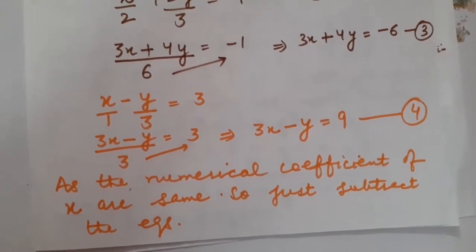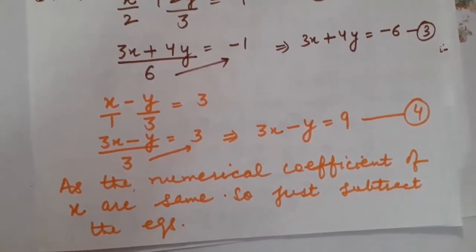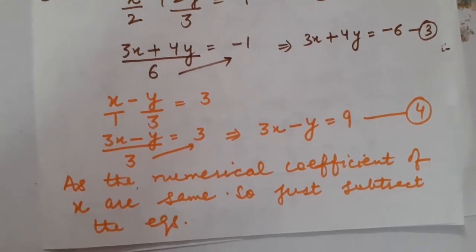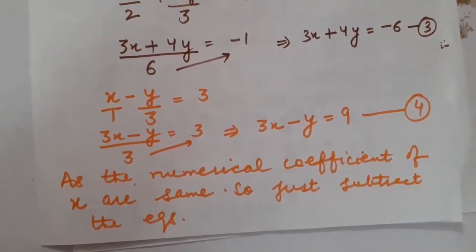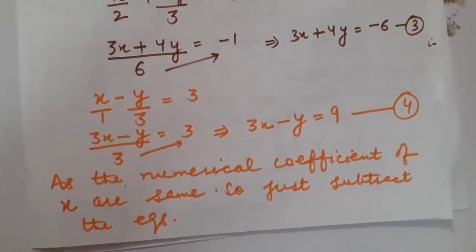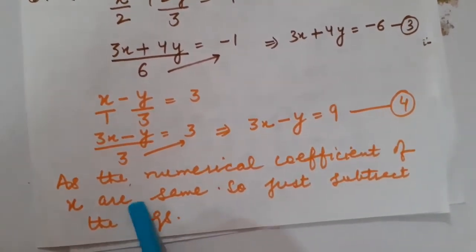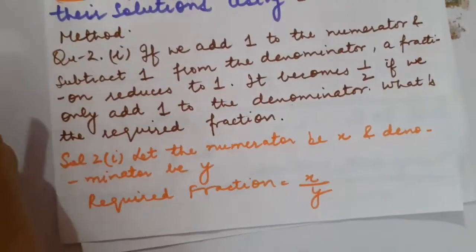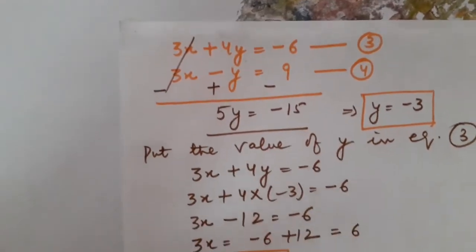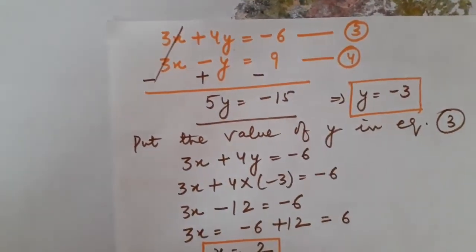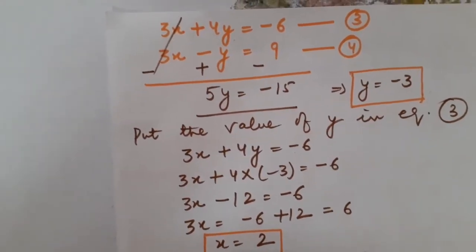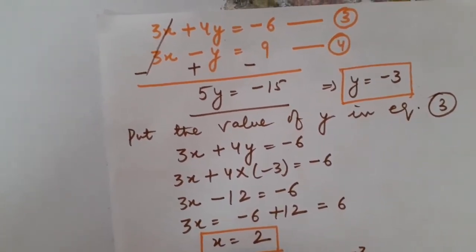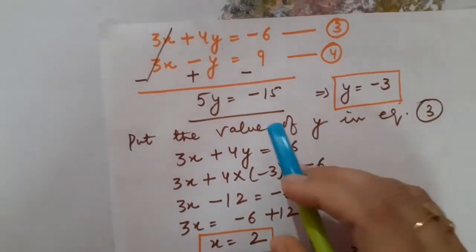You are not supposed to multiply either equation by any number. The reason: the numerical coefficients of x are the same in both equations. I can simply subtract both equations so that 3x and 3x will be eliminated. So, subtracting: 3x plus 4y equals minus 6, and 3x minus y equals 9. Definitely 3x cancels with 3x. 4y plus y becomes 5y, equals minus 6 minus 9, which is minus 15.